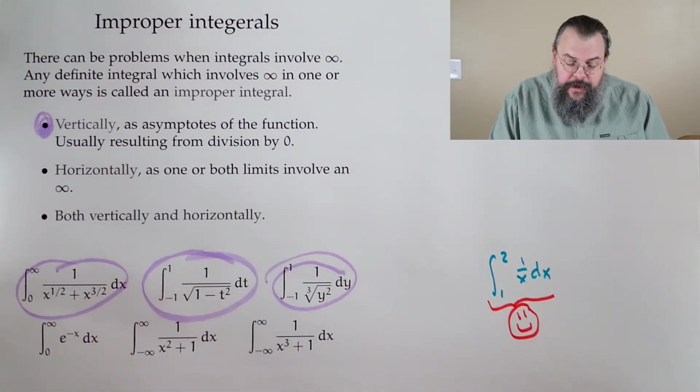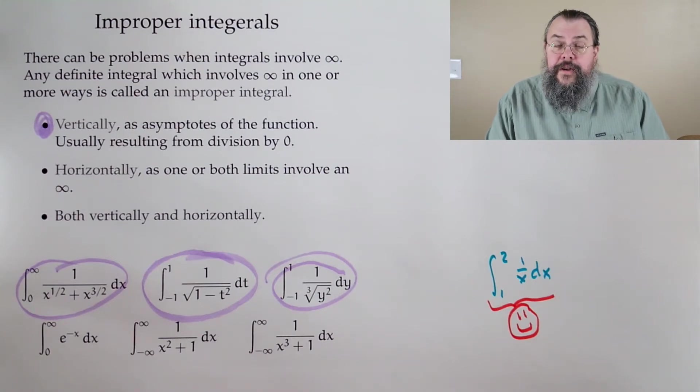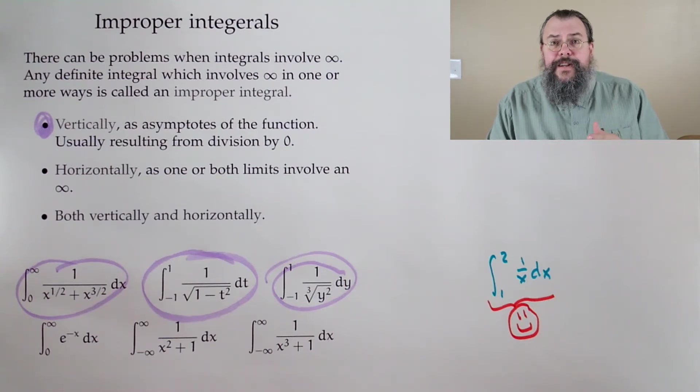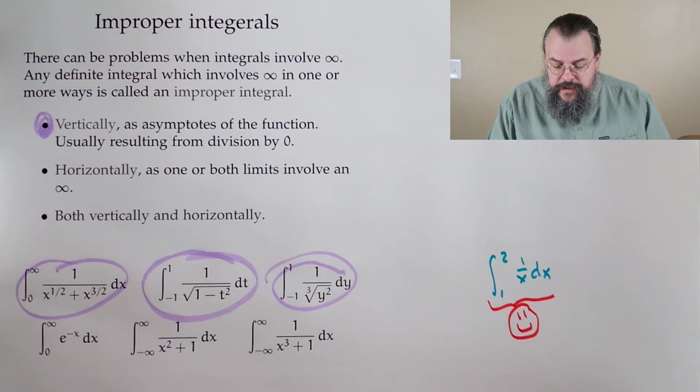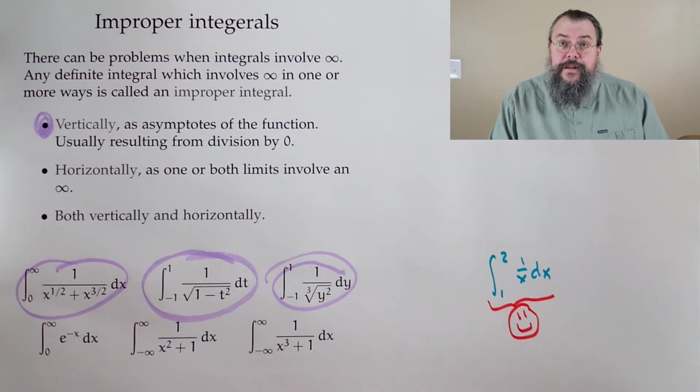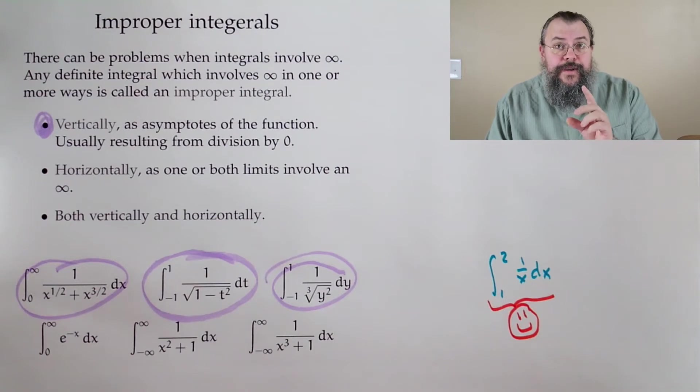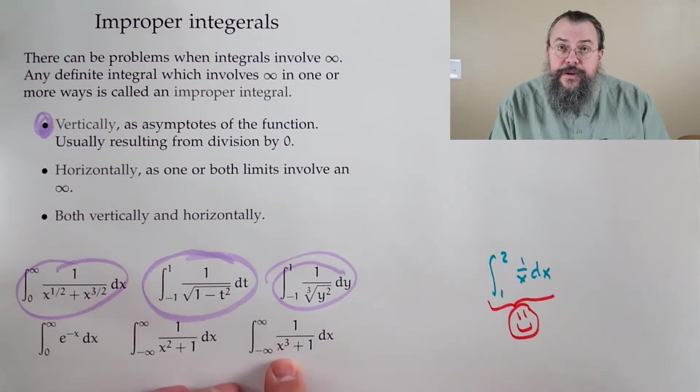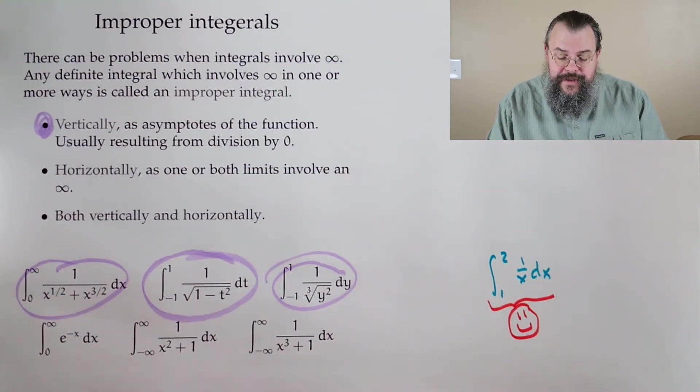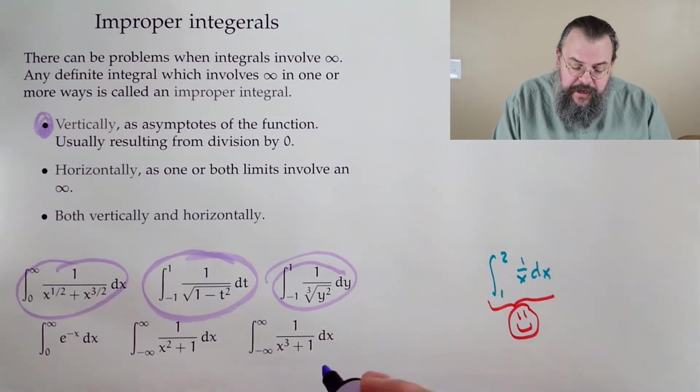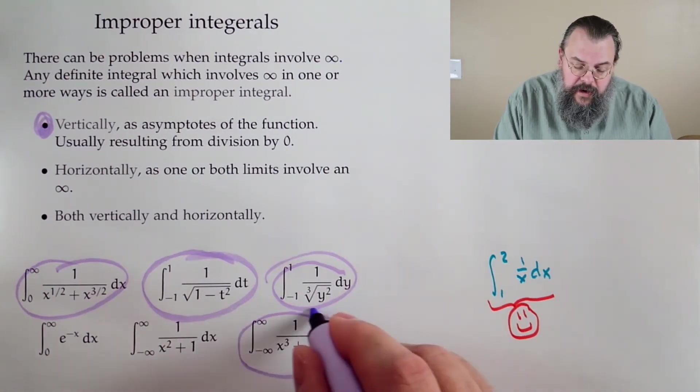E to the minus x is a perfectly fine function. 1 over x squared plus 1 doesn't blow up - the largest it ever gets is 1. 1 over x cubed plus 1 is a little different. If I take a negative cubed, I could get a negative. So negative 1 cubed plus 1 is 0, so that blows up at 0.